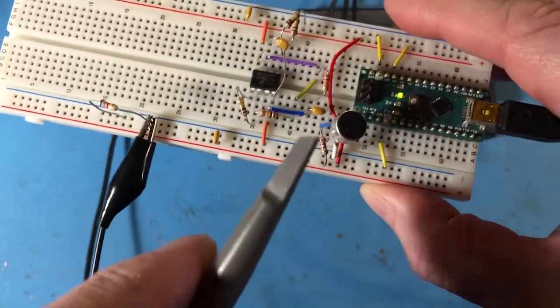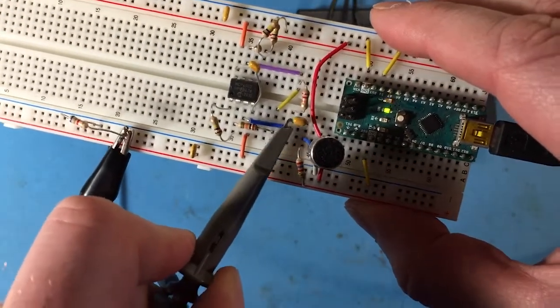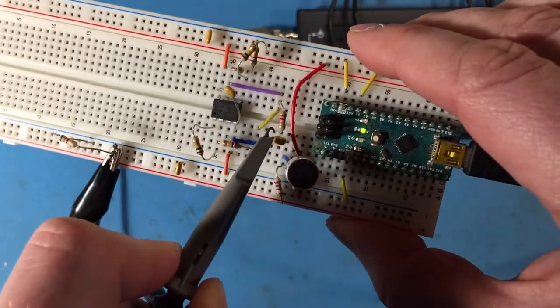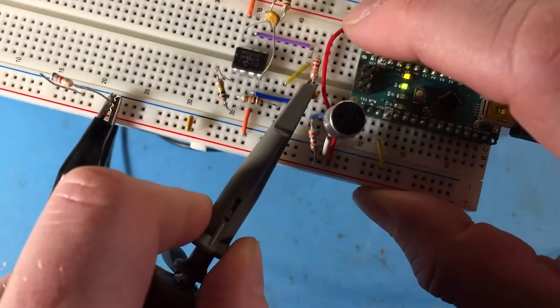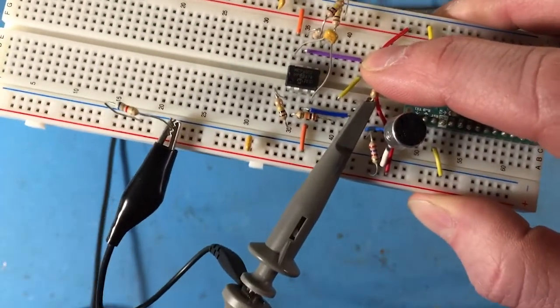And then I want to measure the input going into the amplifier, which just happens to be at the end of this blue wire. So I could connect my probe to the resistor right there, which is connected to the input. So that is my channel A connection.